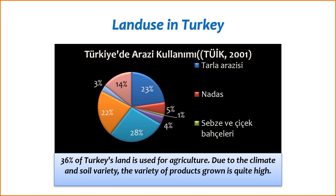5. Precision agriculture — Technology integration: precision agriculture practices, which involve the use of technology such as GPS-guided tractors and sensors, are increasingly being adopted. This allows for more precise and efficient use of resources, optimizing yields and minimizing environmental impact.